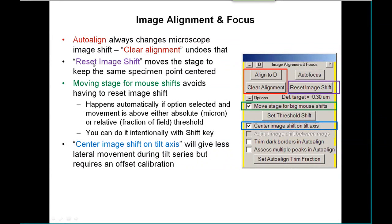The Reset Image Shift will clear out the image shift by moving the stage by a corresponding amount to try to keep the same specimen point centered. That's not perfect, because any time you move the stage, you lose a few tenths of a micron of precision in your positioning. Moving stage for big mouse shifts is a way to avoid having to reset the image shift manually as you make large movements over a number of microns.